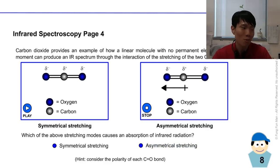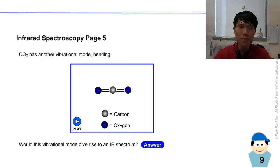So you know the answer to the question: which of these above stretching causes the absorption of infrared irradiation? The answer must be - hint, consider the polarity of each CO double bond - that's right, it must be the asymmetrical stretching. Now, CO2 has another form of vibrational mode: the bending. The bond bends together. So will this give rise to an infrared spectrum? Take a look how it stretches. Certainly, because there's a change in the dipole moment in the molecule.